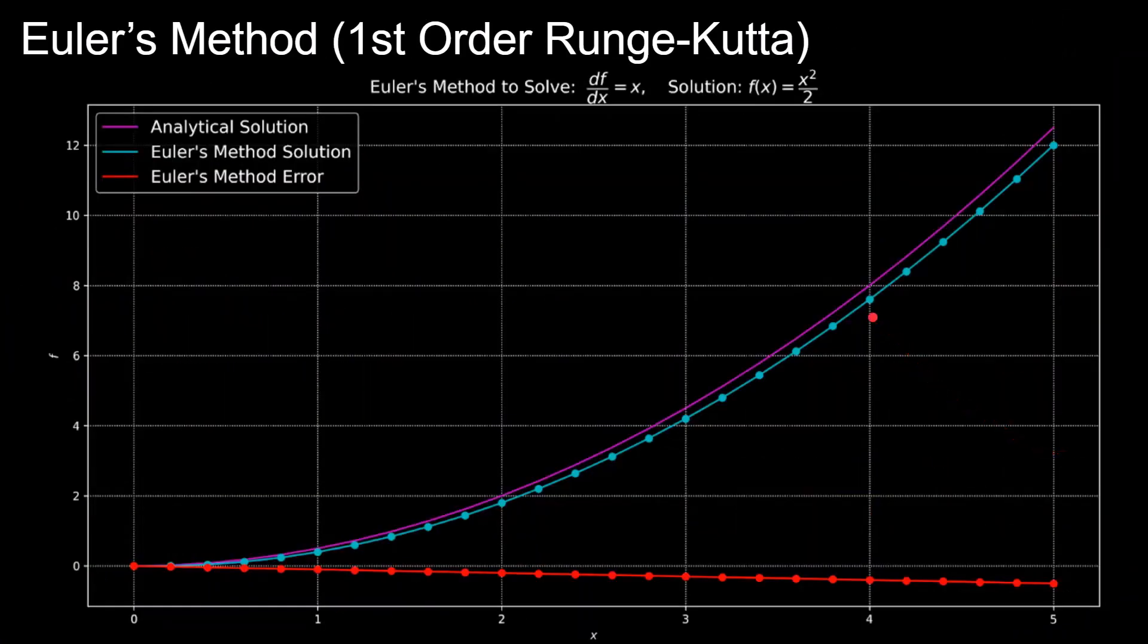So let's start with the simplest method of numerically solving a differential equation called Euler's method. And in this case, we'll use a differential equation, df/dx is equal to x, which has an analytical solution of f(x) is equal to x squared over 2. And in order to solve this using Euler's method, you evaluate the derivative of a function at some time, and you assume that the derivative is constant for the whole time step.